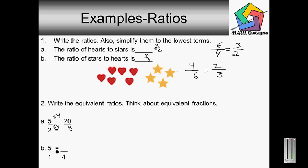Okay, we have five over one equals blank over four. One goes into four four times, so one times four is four, as you can see. Then we multiply the same: five times four is twenty. So we have twenty over four as our final answer to this problem. As you can see, these are equivalent fractions or equivalent ratios.